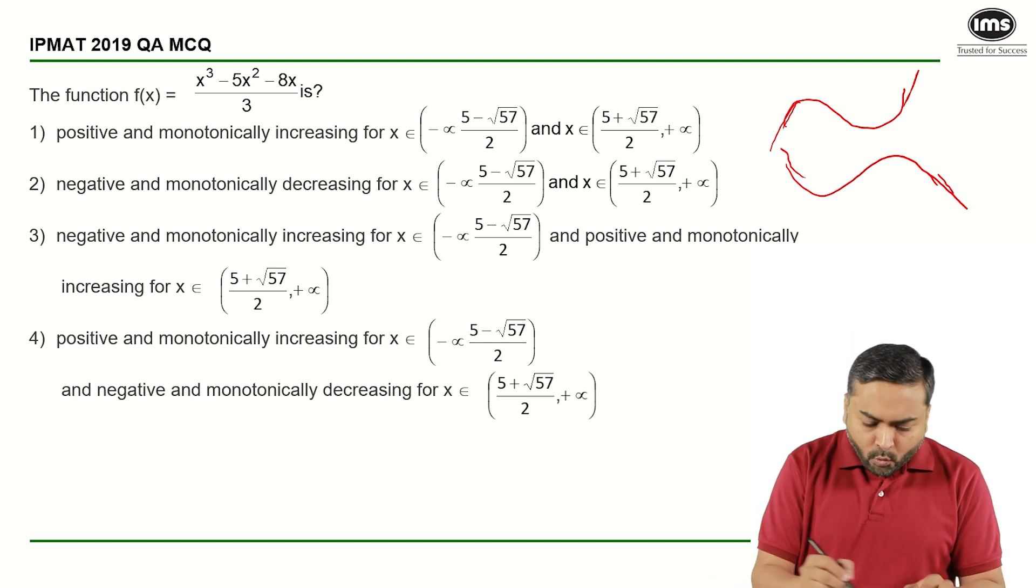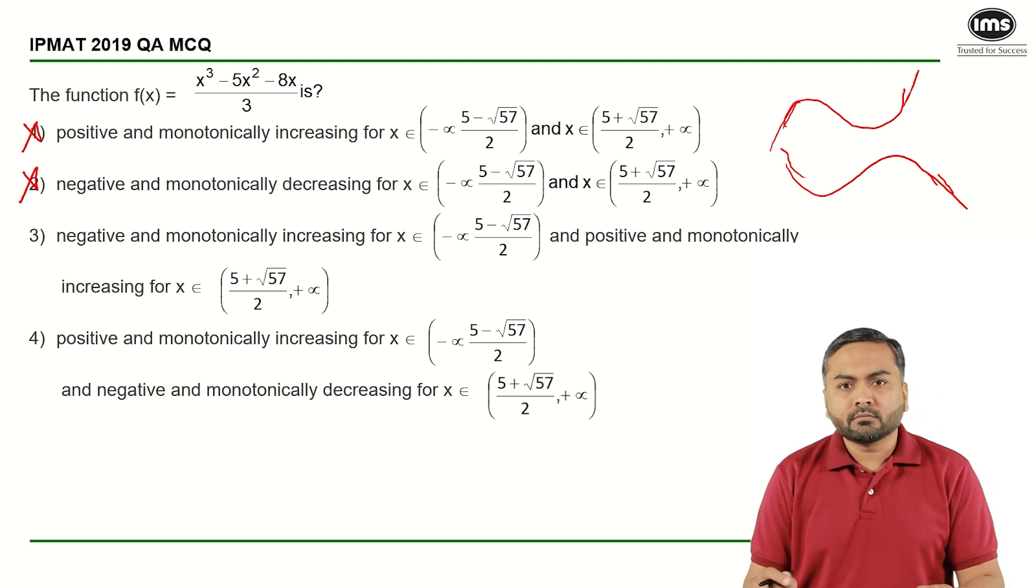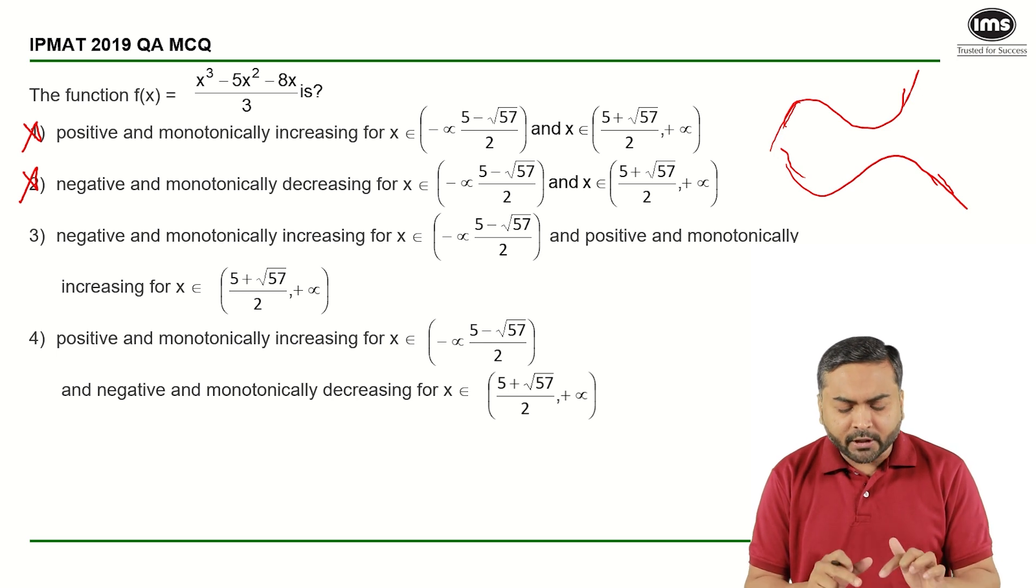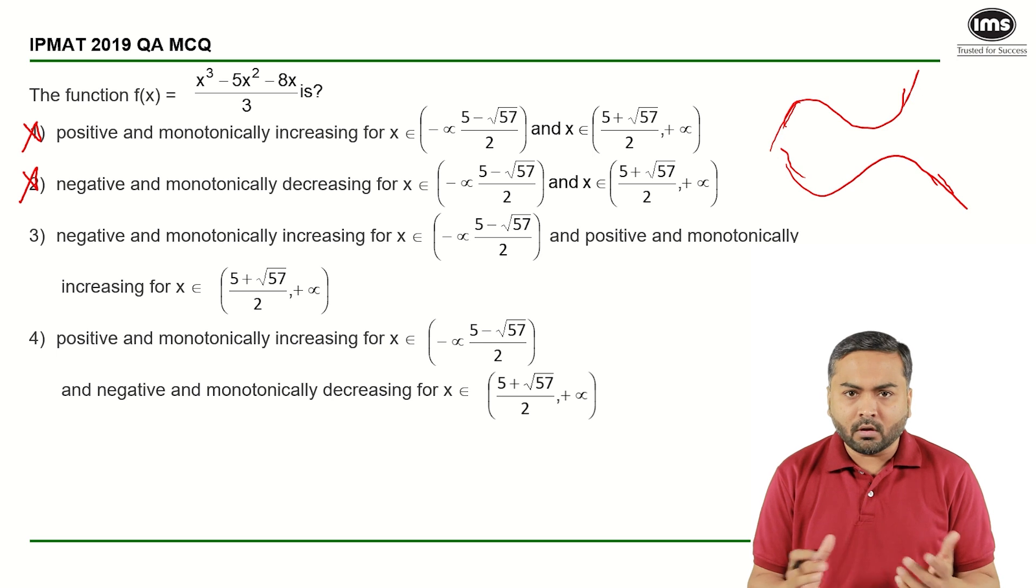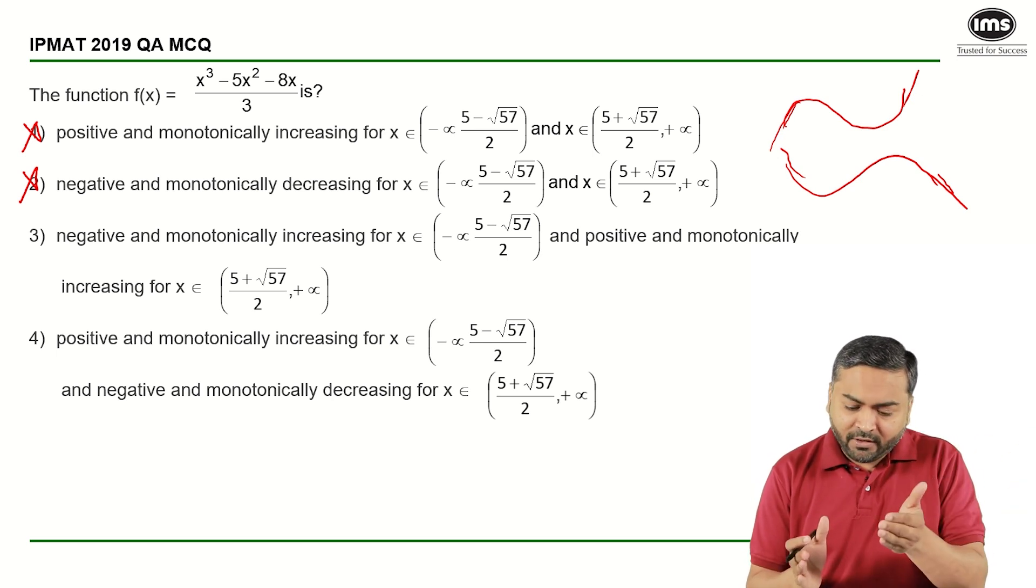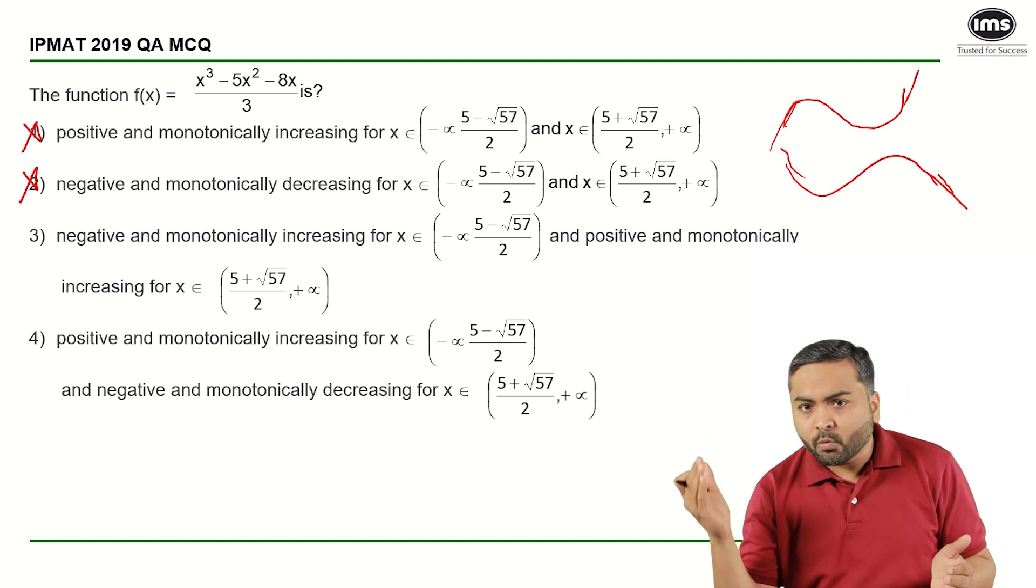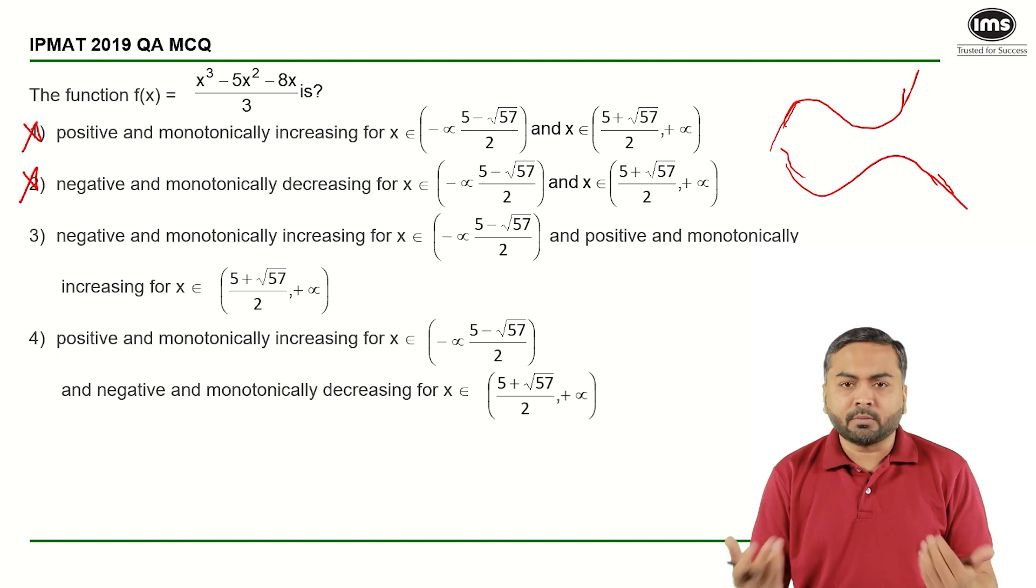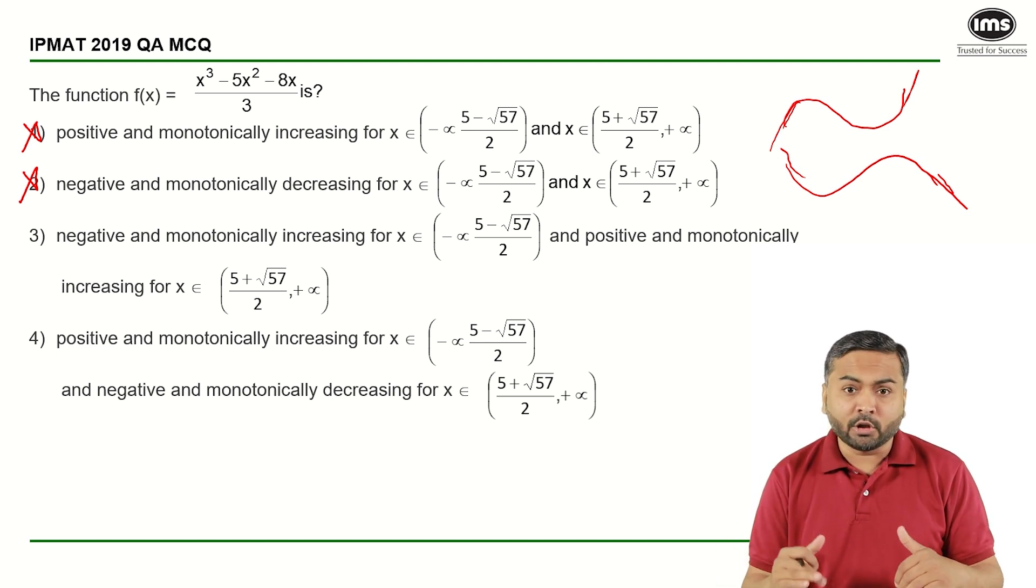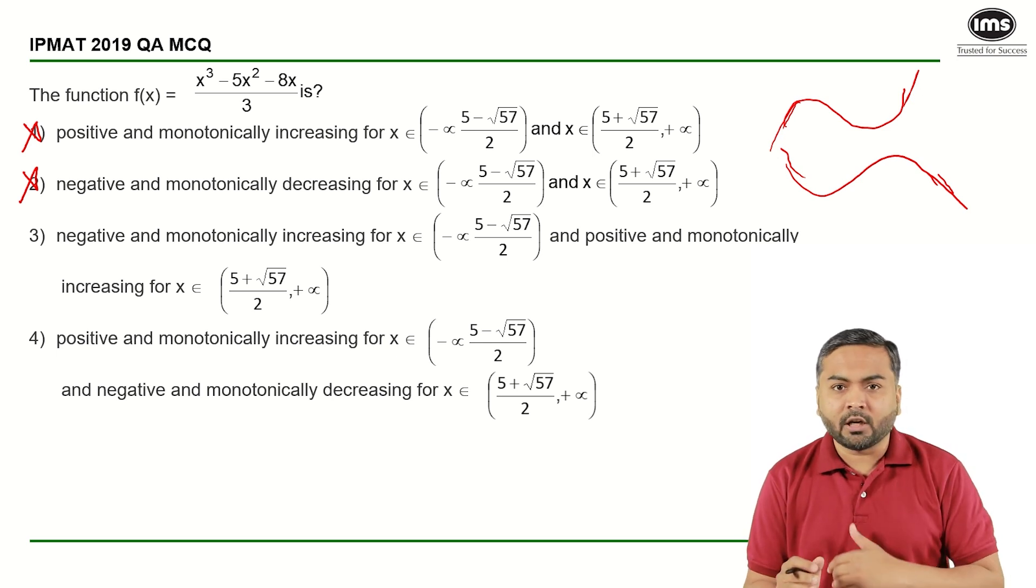So I can straight away rule out my first and second options because it says that it is positive and monotonically increasing for the range. For all the values of x from minus infinity to that irrational number and then from another irrational number to positive infinity, it is always positive. And the next option, here it is always negative. So that cannot be the case and hence we can straight away rule out the first and the second options.